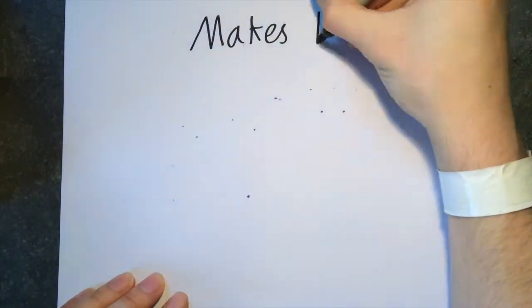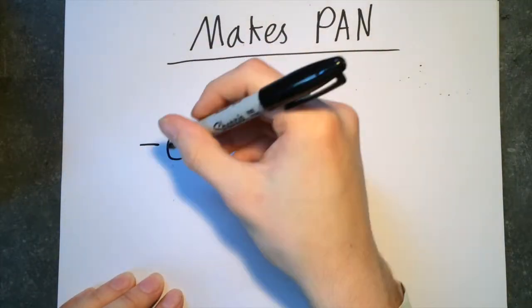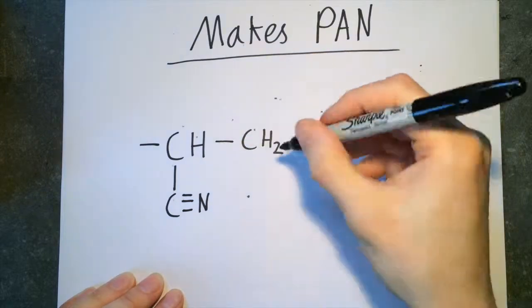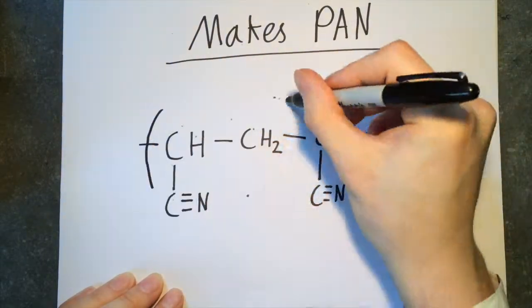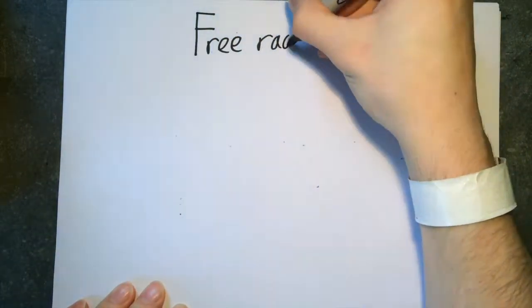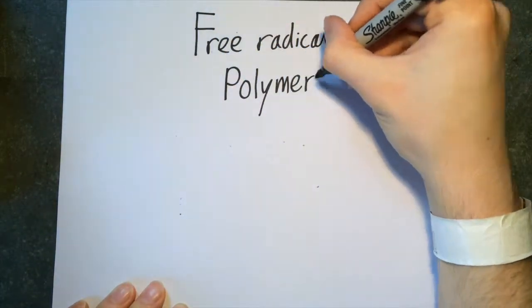This mixture is then blended until free radicals are formed in the acrylonitrile structure. This then leads to free radical polymerization of the acrylonitrile to form PAN. This occurs in three steps: initiation, propagation, and termination.